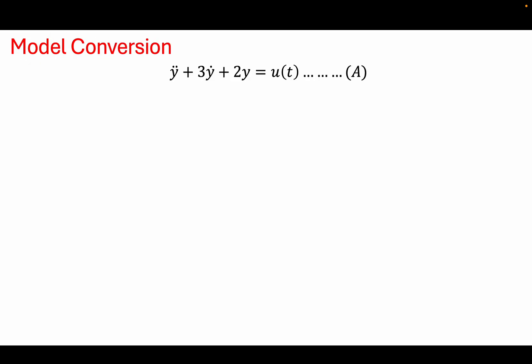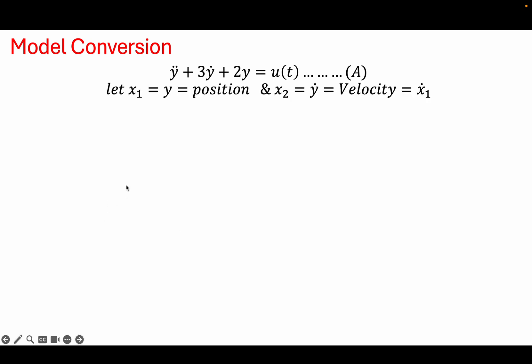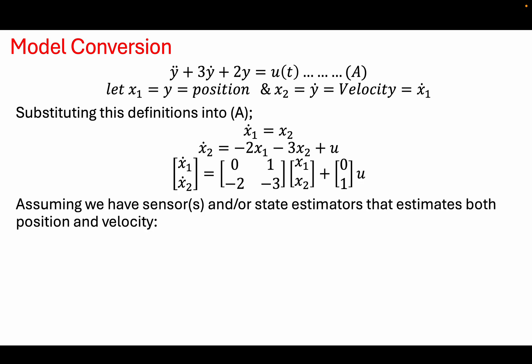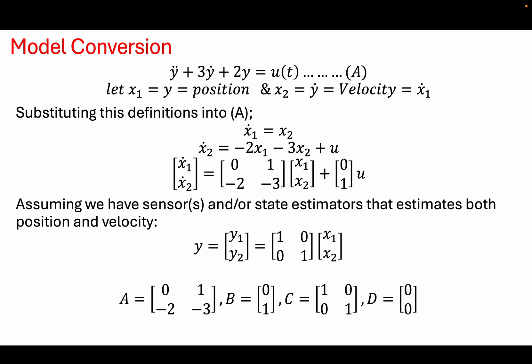To fully understand the condition of the system we need two states: position and velocity. We define x1 to be y (the position) and x2 to be y-dot (the velocity). Therefore x1-dot is just y-dot. Substituting this leads us to state equations which can be represented in matrix form. Assuming full measurement of our states, the output equation follows. So we have our A, B, C, and D matrices defined.